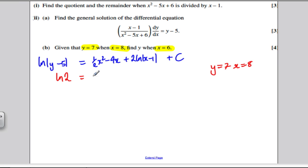Then I'd get ln of 2 is equal to a half times 8 squared. 8 squared is 64. So half of that is 32. 8 times 4 is 32. So minus 32 plus 2 ln of 7 plus C. These cancel.